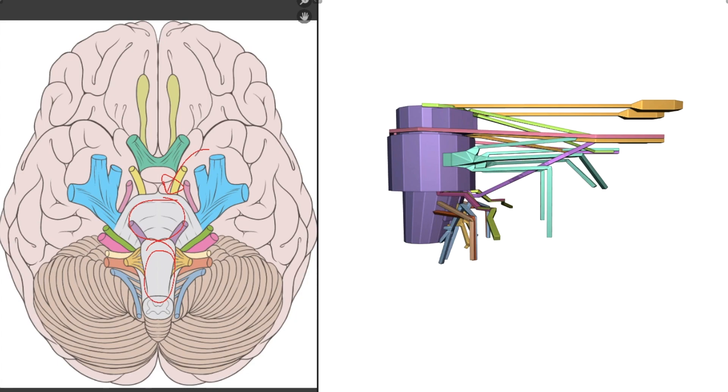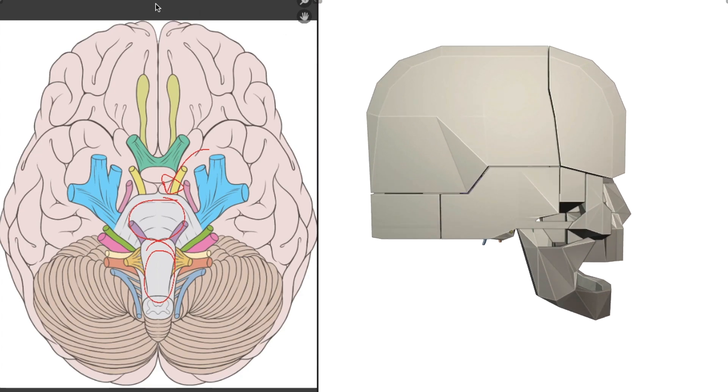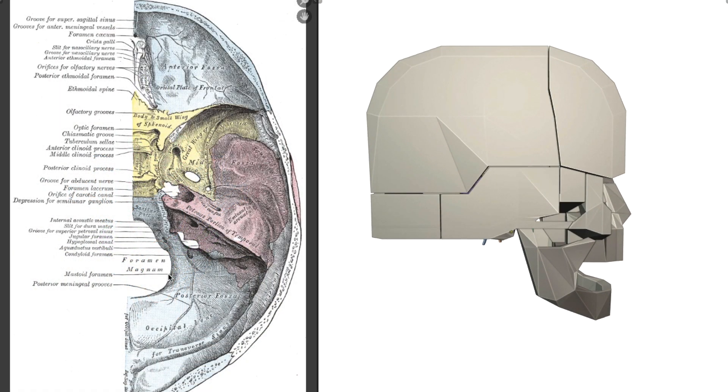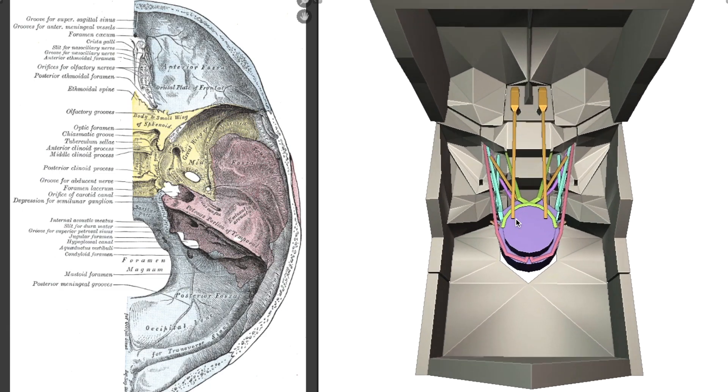We'll bring in our skull model now, as well as our second image over here. This one shows our various foramina of the skull, which are the holes that our cranial nerves pass through. Removing the parietal bone now for a better view, you can see each of these holes is represented in our model.